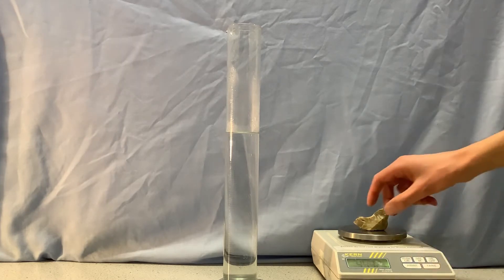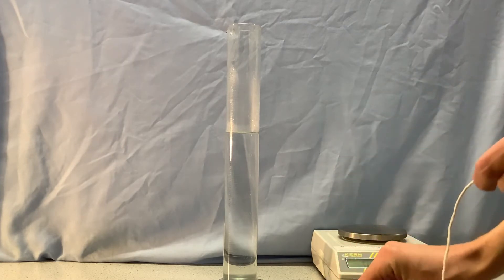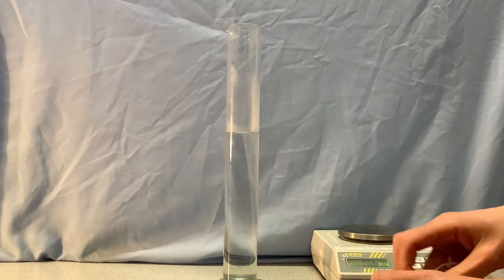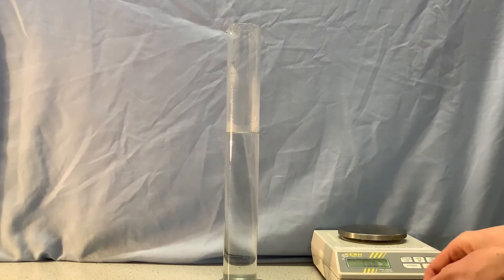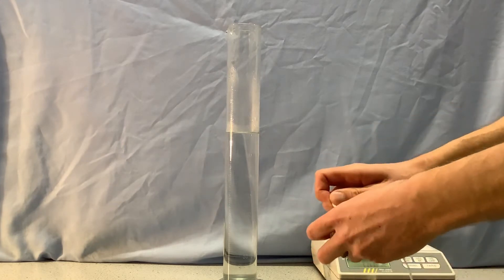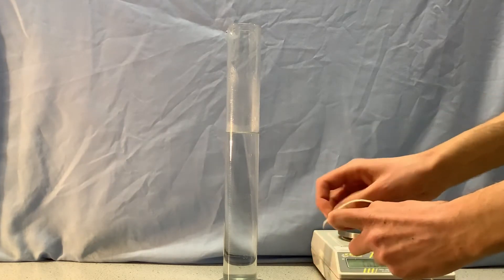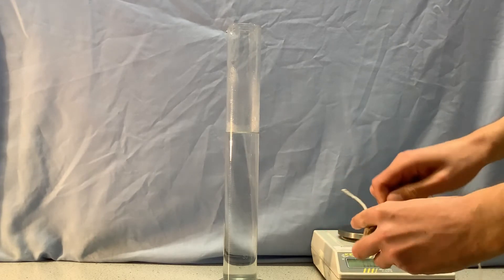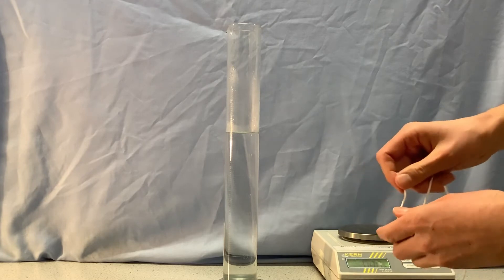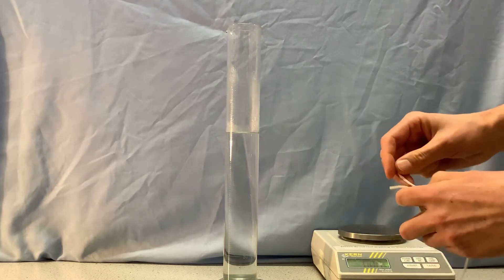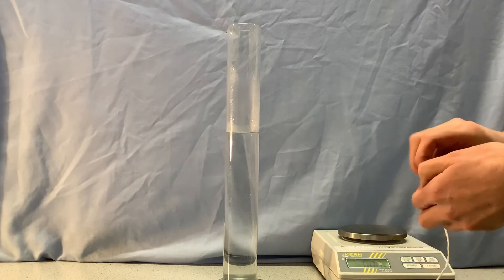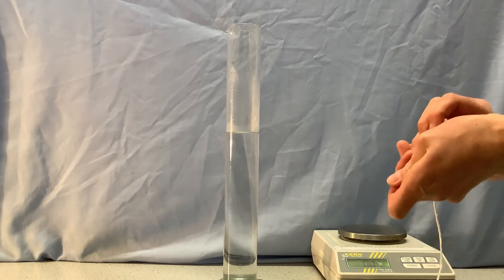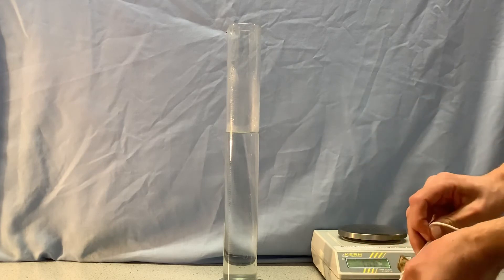Now I'm going to take my rock and I'm going to try and tie this bit of string around it. There would be an argument that I would be better off using a thin piece of thread because the thin piece of thread would have less effect on the volume when I lower it into the water.